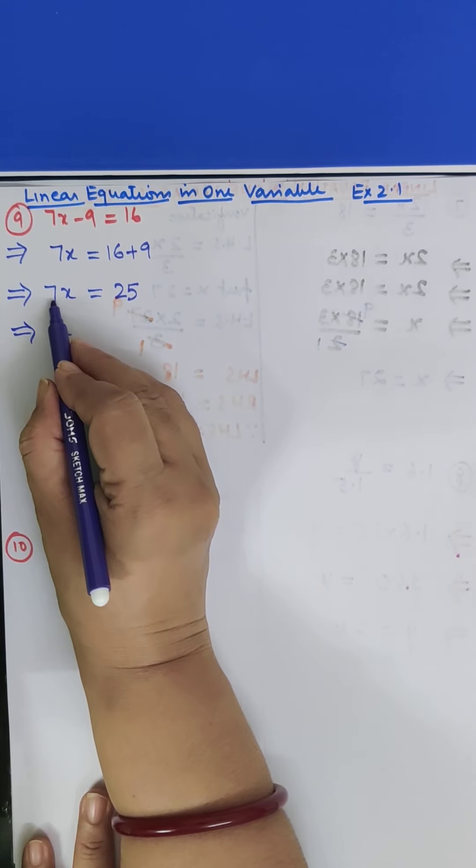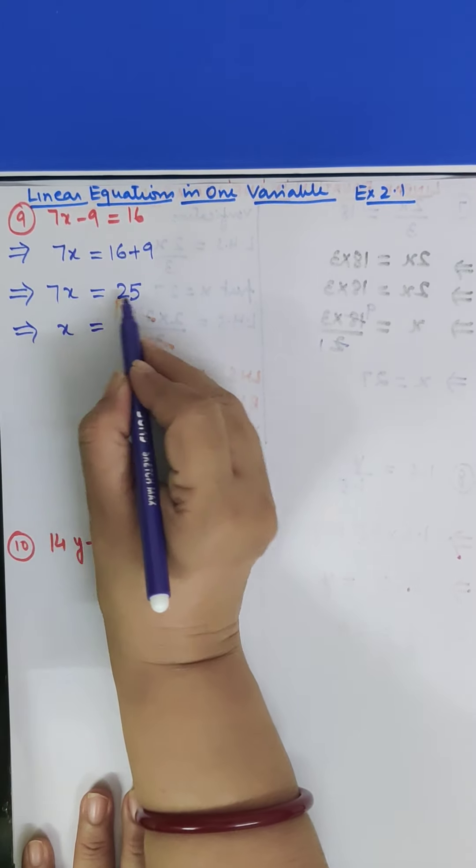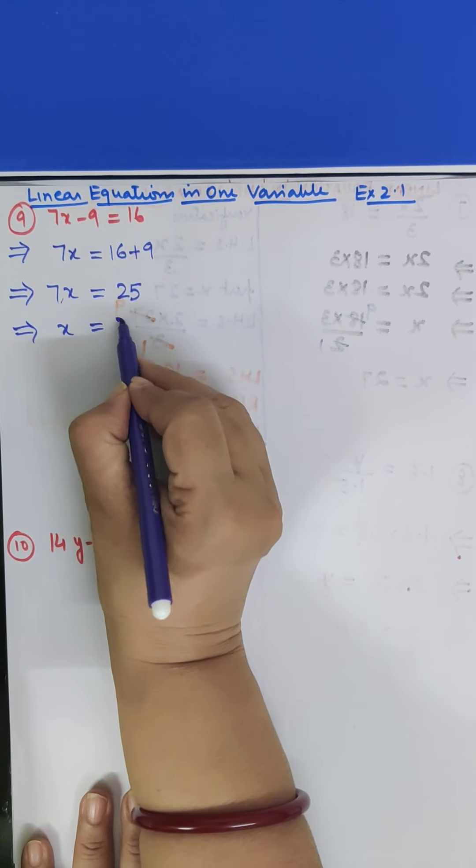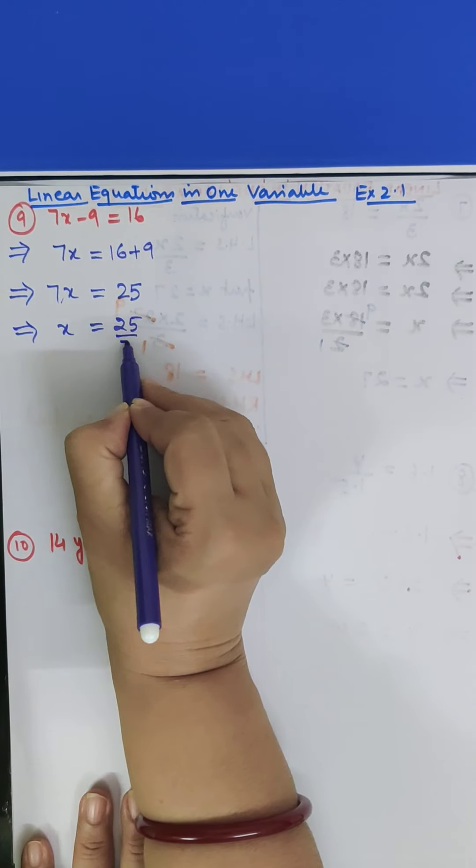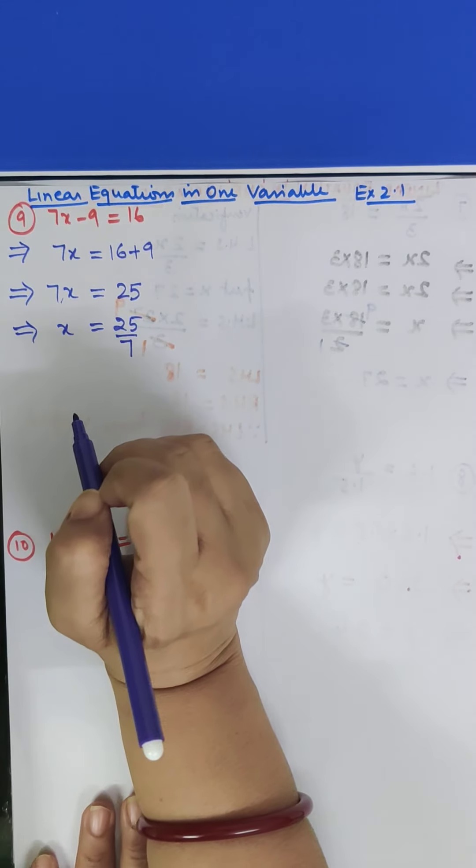Now, we have to find x. So we need to remove this. Now this will come to this side, 7x. So it will come to this side, so 25 upon 7. OK?